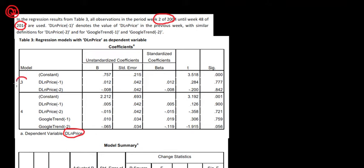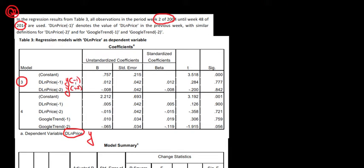The question asks: which hypotheses are tested, what's the name of the test, what's the actual value of the test, and what's the conclusion? In model 3, we have as independent variables — as explanatory variables — the lagged value of the dependent variable: the lagged value of one period of y, and the lagged value of two periods ago.